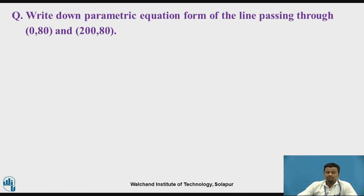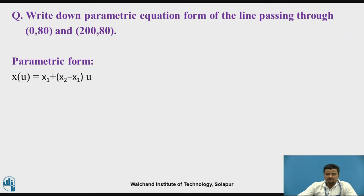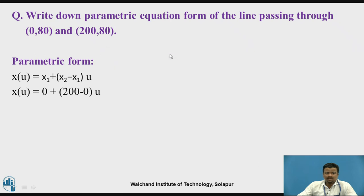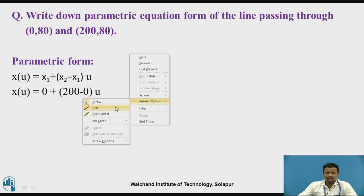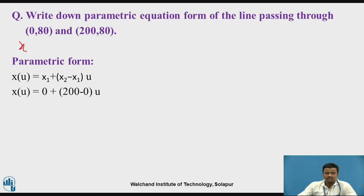Now some numericals based on the equation of the line. We have to write the parametric equation of a line passing through (0, 80) and (200, 0). The given data: x1 = 0, y1 = 80, x2 = 200, y2 = 0. These are the input data points.